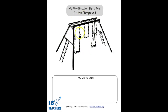Students will be using counters — they can use beans, beads, or even pennies — to act out what's happening in a story that they're hearing auditorily. Down at the bottom of the box, each mat has a quick draw where the child will do a quick draw of their mathematical thinking. In this box they don't need to have a lot of details like we might ask them to do in reading or writing. However, it's a quick draw to show their mathematical thinking.